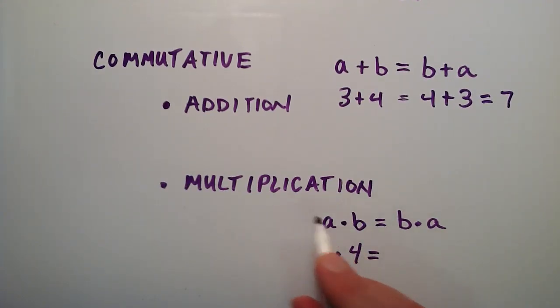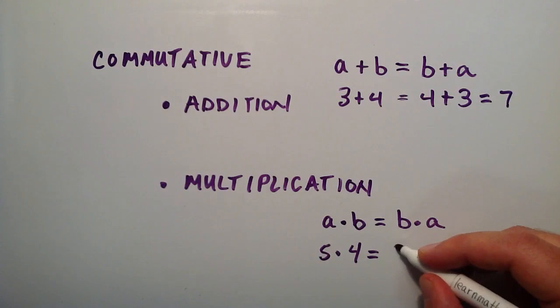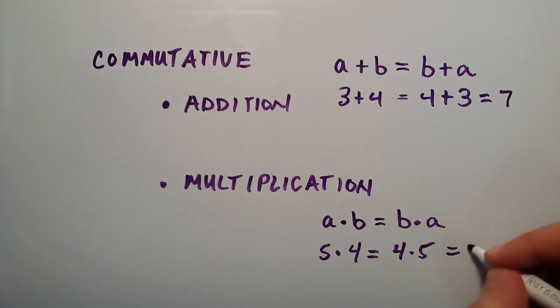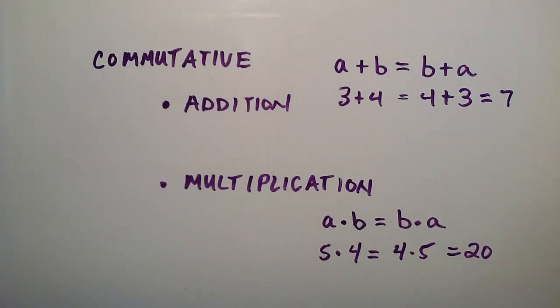By the commutative property of multiplication, 5 times 4 equals 4 times 5, and they both equal 20. That is the commutative property of addition and multiplication.